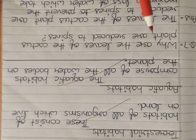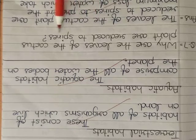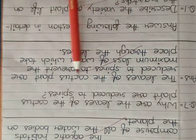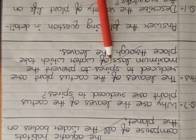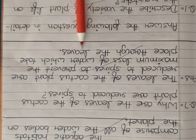Next question is Why are the leaves of the cactus plant reduced to spine? Answer is The leaves of the cactus plant are reduced to spine to prevent the maximum loss of water which take place through the leaves.